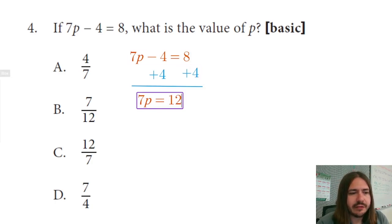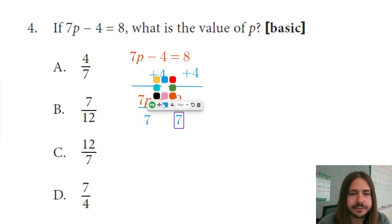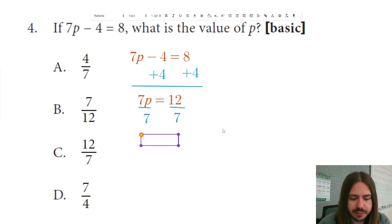So we have 7 times p. The way we're going to get rid of that 7 is we want to do the opposite operation. If this is 7 times p, we want to divide both sides by 7 to get rid of that 7 on the left-hand side. After we divide both sides by 7, we get p equals 12/7.